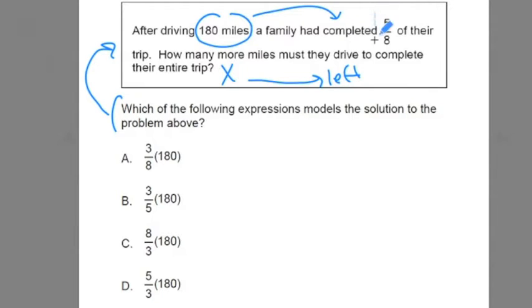Now how can I represent that as a fraction? I know that what's completed is 5 eighths. What's left over? Well, if 5 eighths are completed, I think it makes sense that 3 eighths are left.